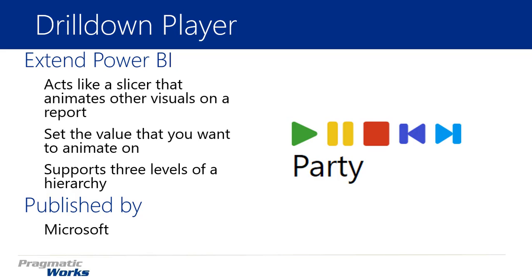What sets the Drill Down Player apart from the Play Axis is that it allows you to have multiple levels of hierarchy. Whenever you use this one, you could place multiple levels — something like country, state, county — and then drill in deeper and deeper within the Drill Down Player, up to at least three levels within your hierarchy.